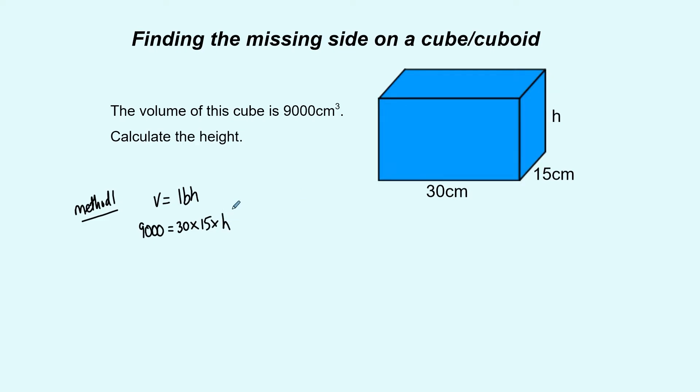Now at this stage what we have is an equation and what we can do is simplify it and try and solve it. 9000 equals if you type in 30 times 15 into your calculator you'll get 450 times h or 450h. Now you'll have covered simple equations like that and what we're going to do to solve this is we're going to divide both sides by 450 to find out what h equals. So we're dividing here by 450 to find h and that should give you 20 when you type that into the calculator.